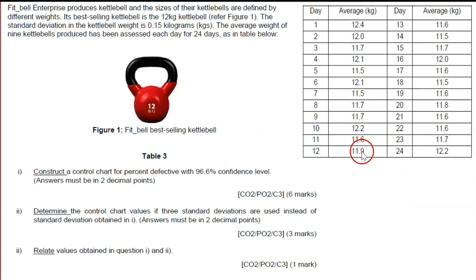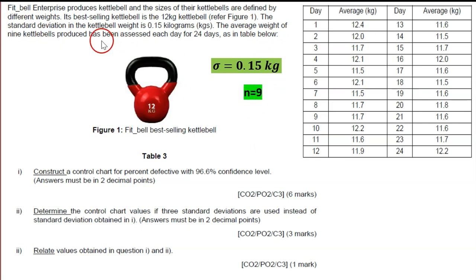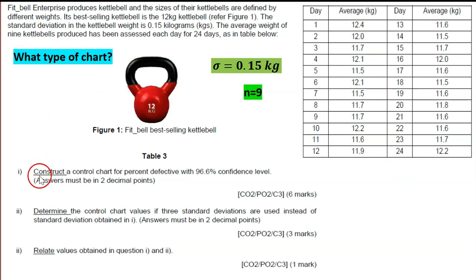Let's do the second question. This is a 10-mark question. We need to know what type of chart to use and what information is given. They give us a kettlebell problem with standard deviation sigma = 0.15, and the average weight of 9 kettlebells — so N = 9 — for 24 days. They give us the averages (X-bar) for all 24 days. We need to construct a control chart.